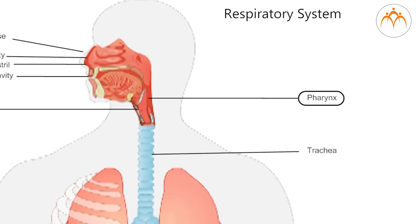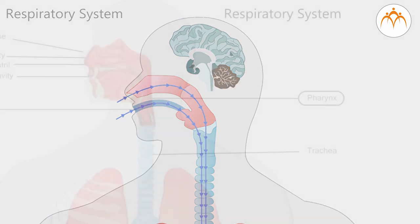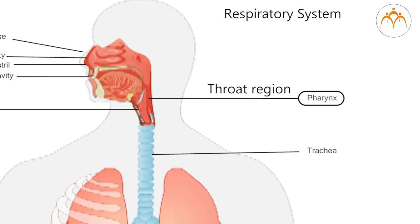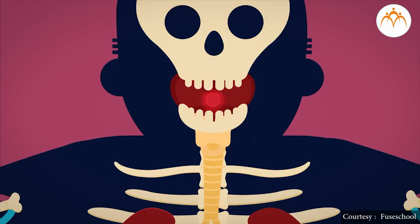We are also able to detect smell as there are specialized cells present in the nose. The air inhaled through the nose passes through the pharynx. In simple words, pharynx means the throat region of the body. Food pipe and windpipe open in the pharynx. At the opening of the windpipe there is a lid. When we swallow food this lid remains closed, so food moves to the food pipe and not to the windpipe by mistake. Otherwise this lid is open for entry of air into the windpipe.